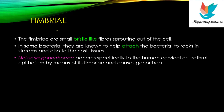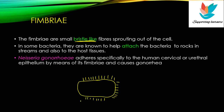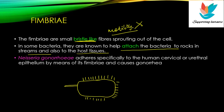The third appendage is fimbriae. Fimbriae have bristle-like structures all over the surface of bacteria. Pili are a little longer and tubular, while fimbriae are bristle-like. The main function of fimbriae is to help bacteria attach to rocks, streams, and host tissue. Again, there is no role in motility. For example, Neisseria gonorrhoeae, which causes gonorrhea — a sexually transmitted disease — attaches to human cervical or urethral epithelium by means of fimbriae.